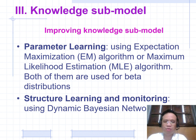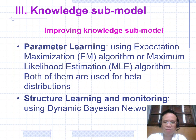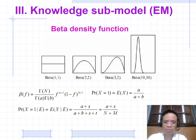Improving the Knowledge submodel involves two ways: first, parameter learning using the Expectation Maximization (EM) algorithm or Maximum Likelihood Estimation (MLE) algorithm — both used for beta distribution. The second way is structure learning and monitoring using the Dynamic Bayesian Network (DBN), improving the submodel using the EM algorithm and a beta density function.